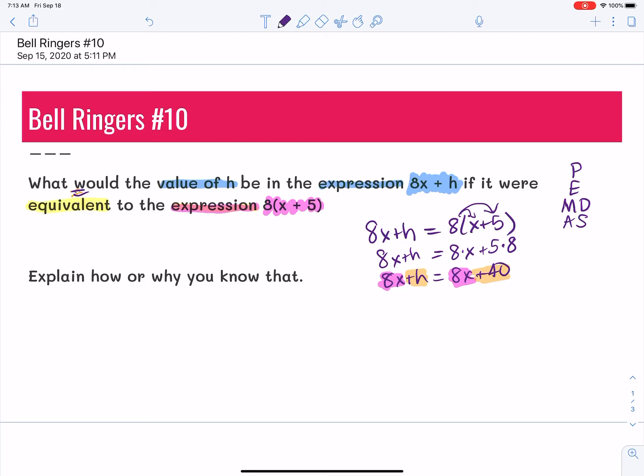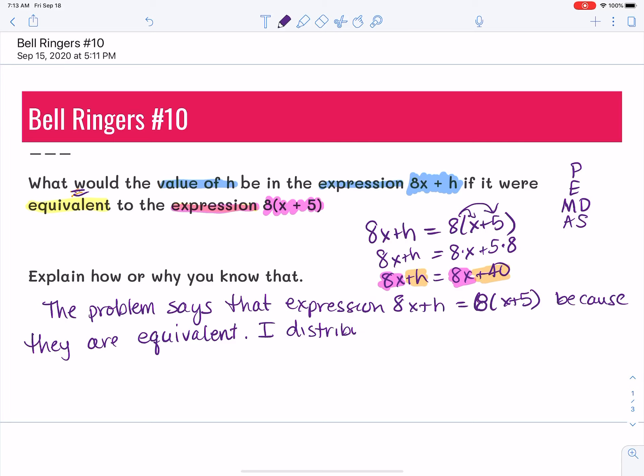So let's write that down and make that make sense in the math vocabulary. The problem says that expression 8x plus h equals 8 times x plus 5, because they are equivalent. So I distributed 8 times the quantity x plus 5.